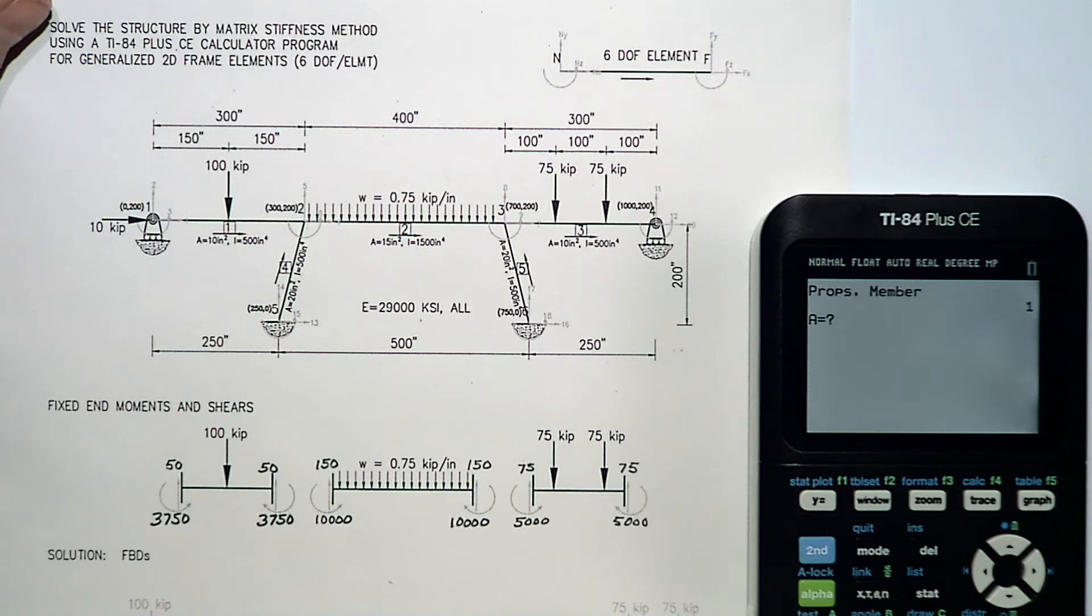Now the properties of members. I have ten inches squared for member one. All materials have a modulus of elasticity of twenty-nine thousand. Moment of inertia of five hundred. Fixed end shear for member one is fifty. Fixed end moment is thirty-seven fifty. Far end fifty. And a negative thirty-seven fifty, counterclockwise or negative. There is my member stiffness matrix for that one.